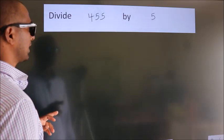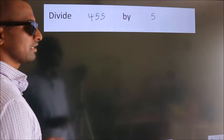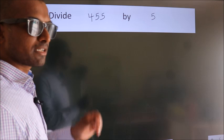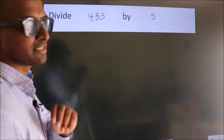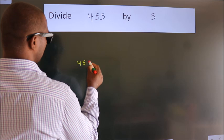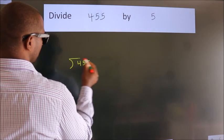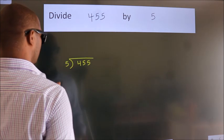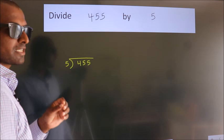Divide 455 by 5. To do this division, we should frame it in this way. 455 here, 5 here. This is your step 1.